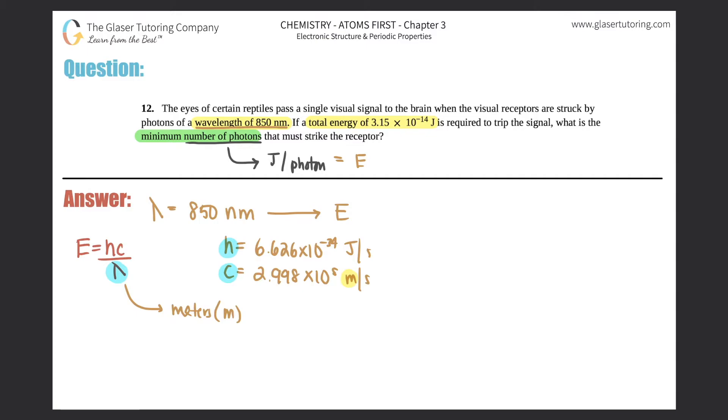But what did they give us? They gave us 850 nanometers. So the first thing you're going to have to do is convert 850 nanometers into meters, and then you can plug in for meters into the formula.